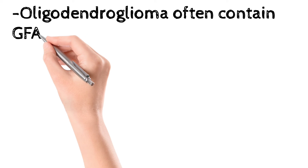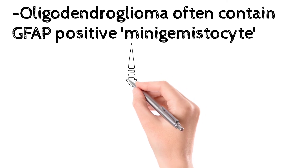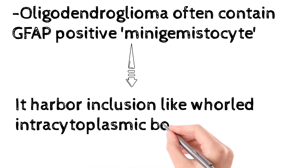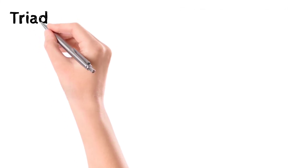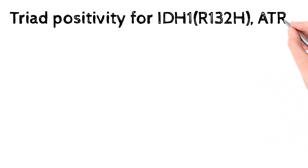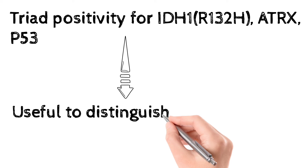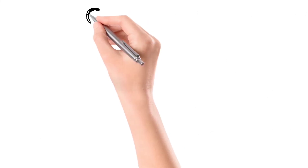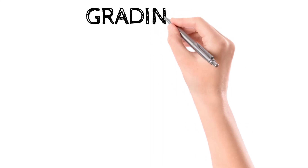Oligodendroglioma often contains GFAP-positive mini gemistrocytes, which harbor inclusions in the cytoplasm — particularly rolled intracytoplasmic bodies of filamentous substance. A triad positivity for IDH1 mutation, ATRX, and p53 is useful to distinguish oligodendroglioma from IDH-mutant astrocytoma.